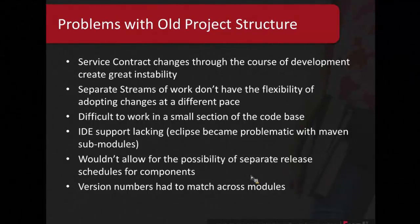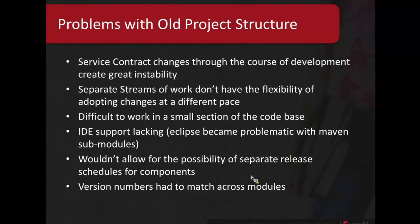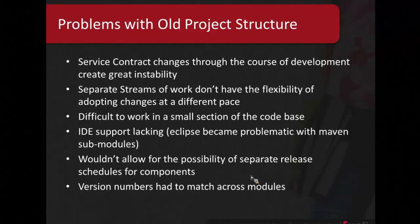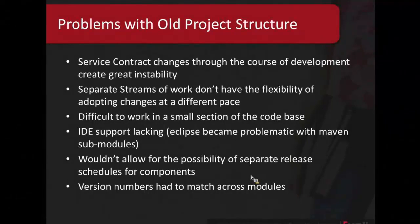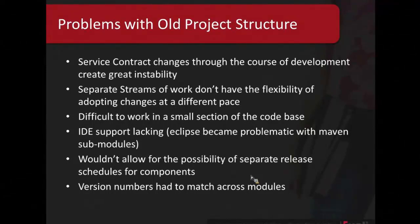One team may make service changes and another team may feel it's too risky to pull in those changes right away. So we need the ability to adopt changes at different paces for different streams of work, which was really difficult with the old structure. It was also difficult to pull a small section of the codebase and work in it — there tended to be a lot of interdependencies. About two years ago we started noticing problems with the Eclipse support of this Maven module hierarchy. There were major performance issues and stability problems where the build would just break randomly, and it came down to Eclipse's Maven plug-ins not really supporting that structure fully. So we had to switch to IntelliJ, which is why we're currently using IntelliJ as our IDE of choice.